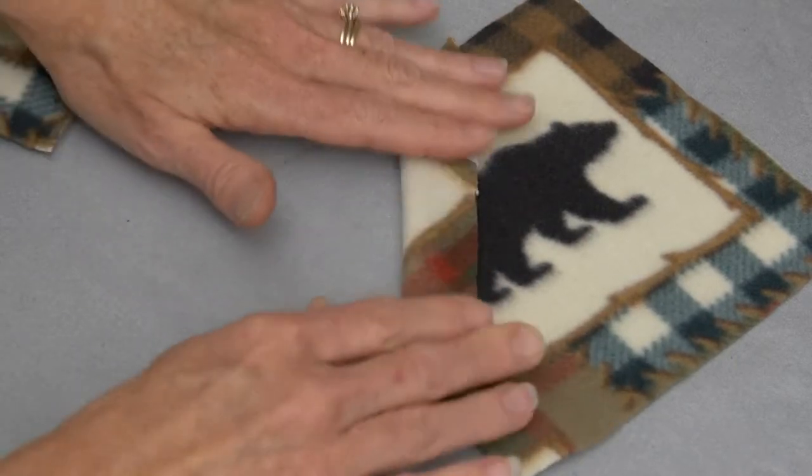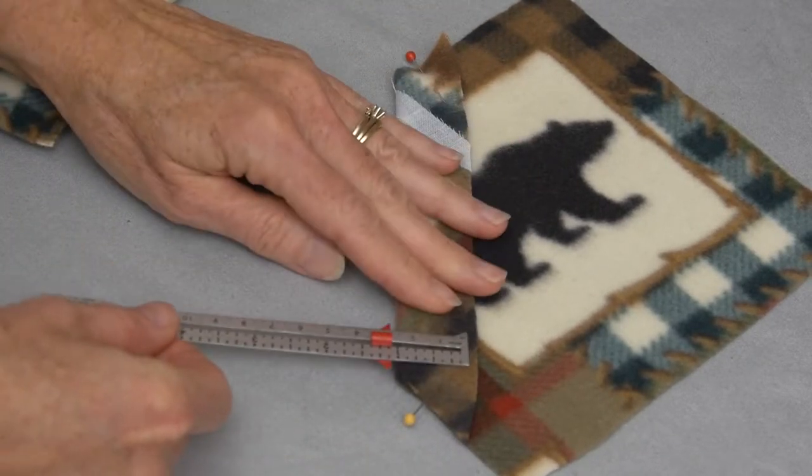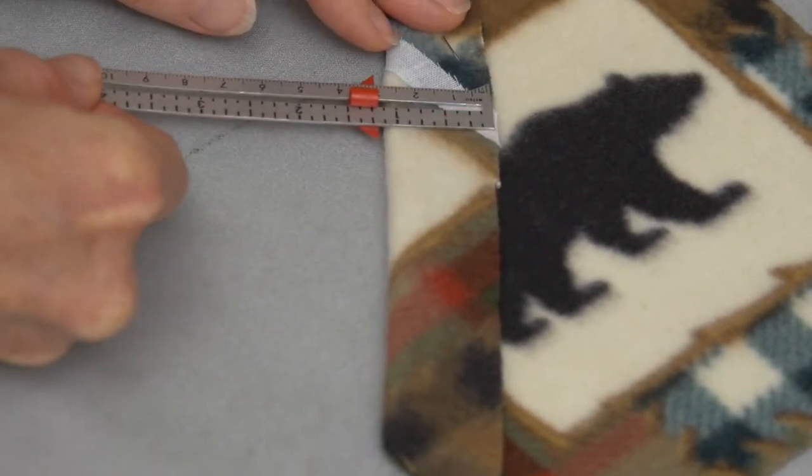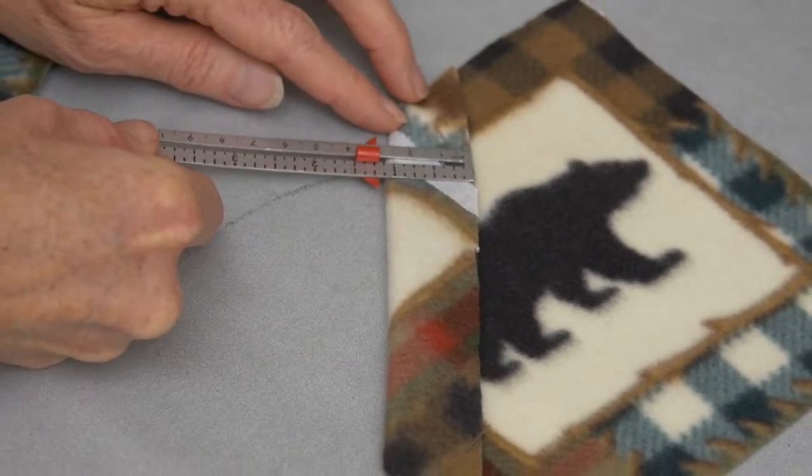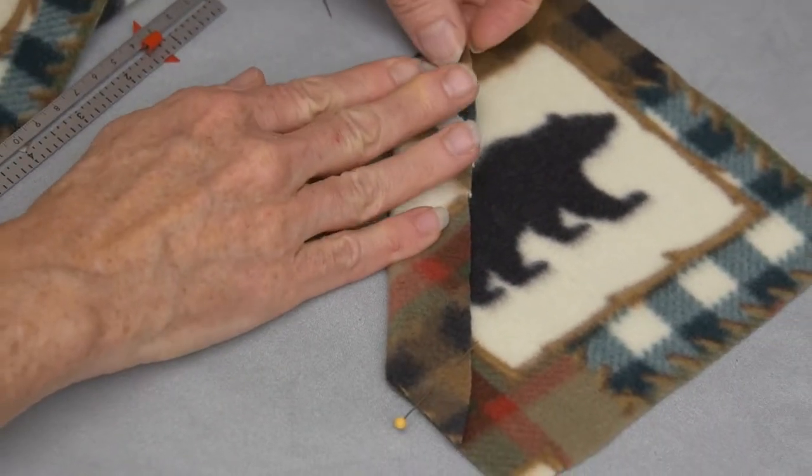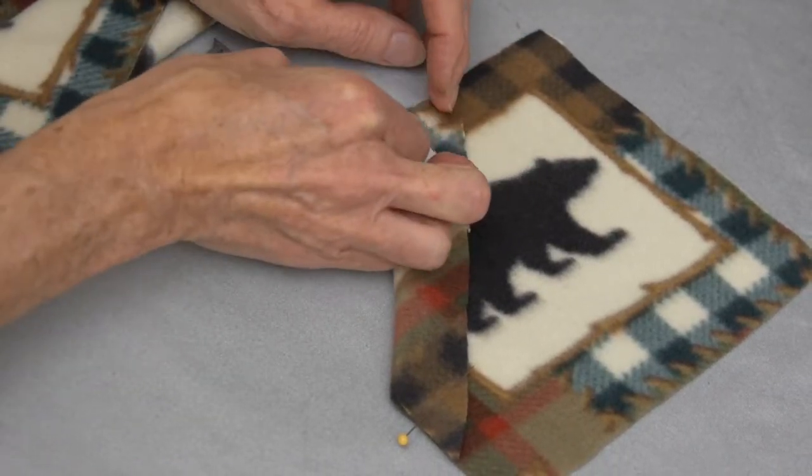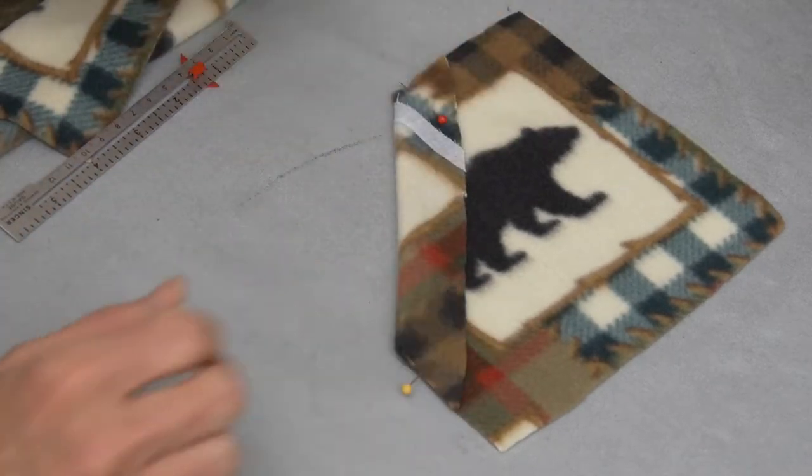Just pin that edge down. If all goes well, that edge that you fold it over is the same width from top to bottom. If it's not folded quite right, adjust that just a little bit so that it is. Then we are going to sew the seam of this pocket.